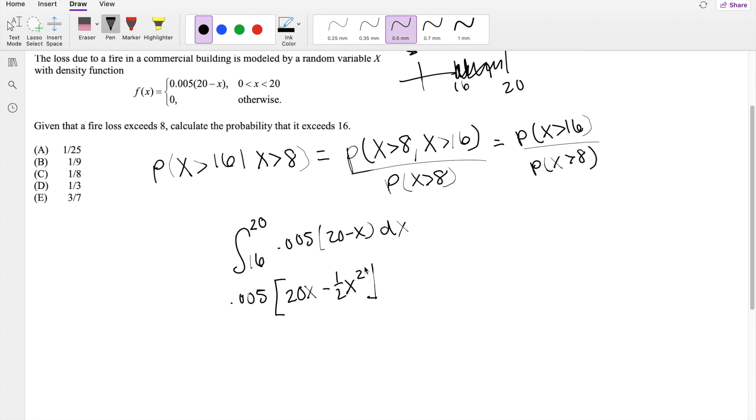Integrating from 16 to 20. So this is equal to 0.005, 20 times 20, 400, minus 20 squared, minus 200, minus the lower limit here.